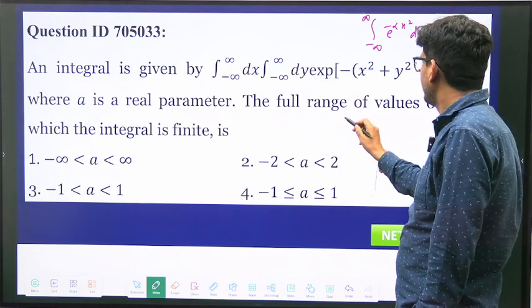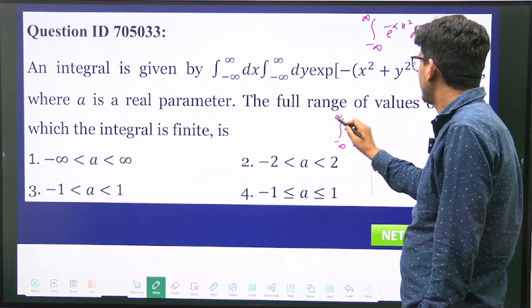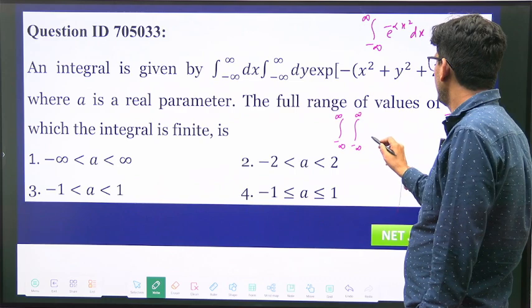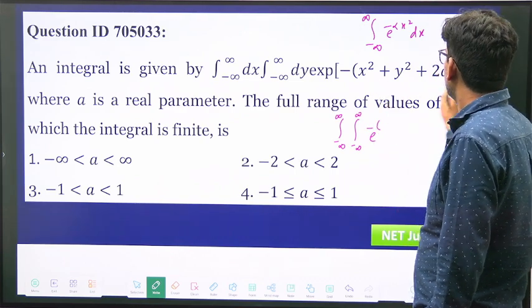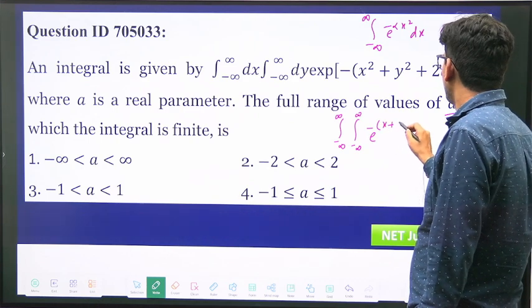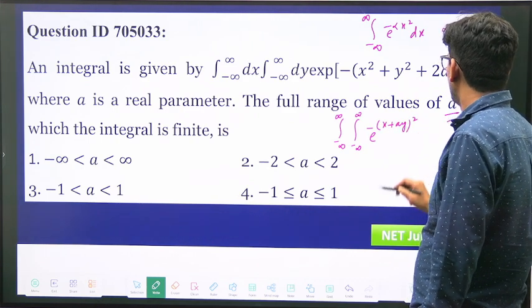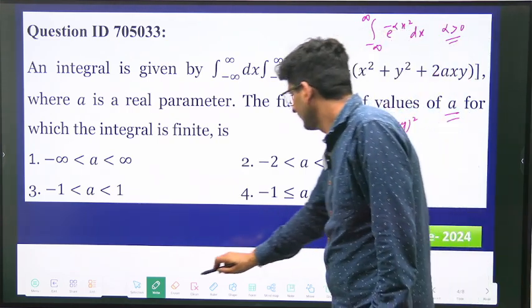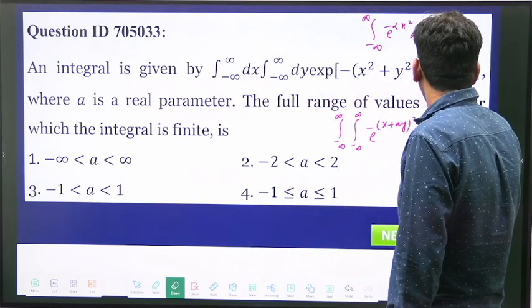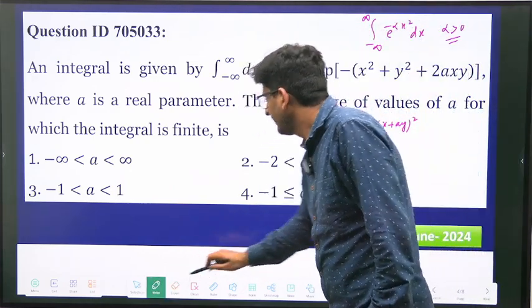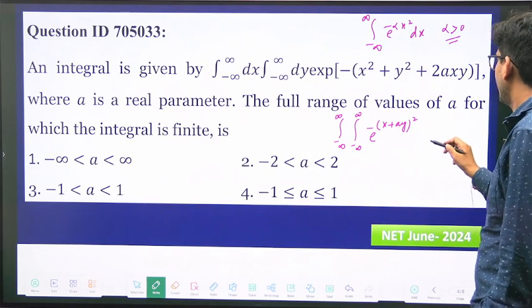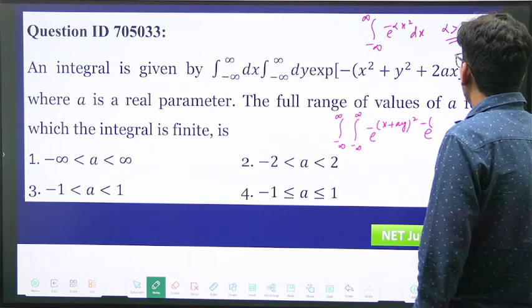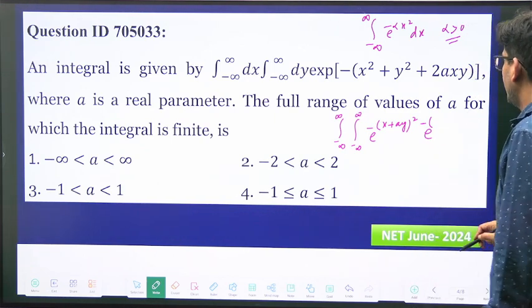If I write this integral from minus infinity to plus infinity, e to the power minus, let us make it a perfect square. It will become (x + ay)² so x² + 2axy + a²y². I will have -a²y², I have to subtract inside so -a²y² will become +a²y².